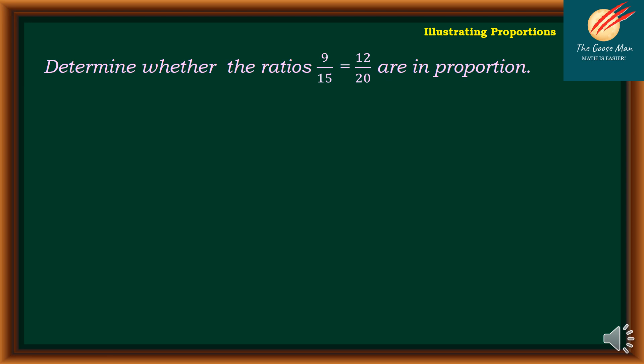To illustrate proportion, let us recall the methods in determining proportionality. Let's have this example: determine whether the ratios 9 over 15 is equal to 12 over 20 are in proportion. We will use the first method, which is what we call cross-product.